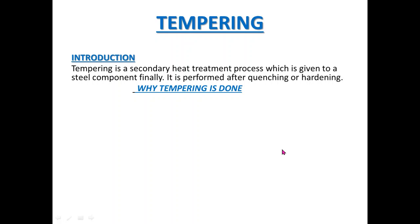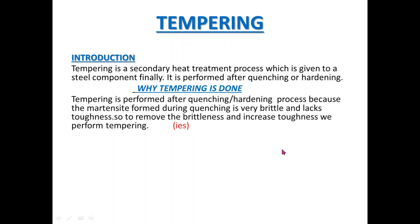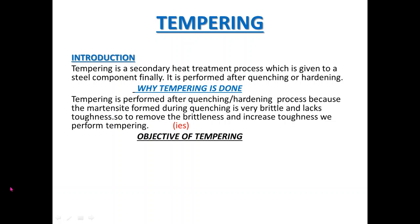We know that the martensite phase which is formed during the quenching process makes the steel hard and brittle. Also, steel lacks toughness. This steel cannot bear impact loads. So, to remove the brittleness and impart necessary toughness by marginally sacrificing hardness, we perform tempering. The objectives of tempering are as follows.